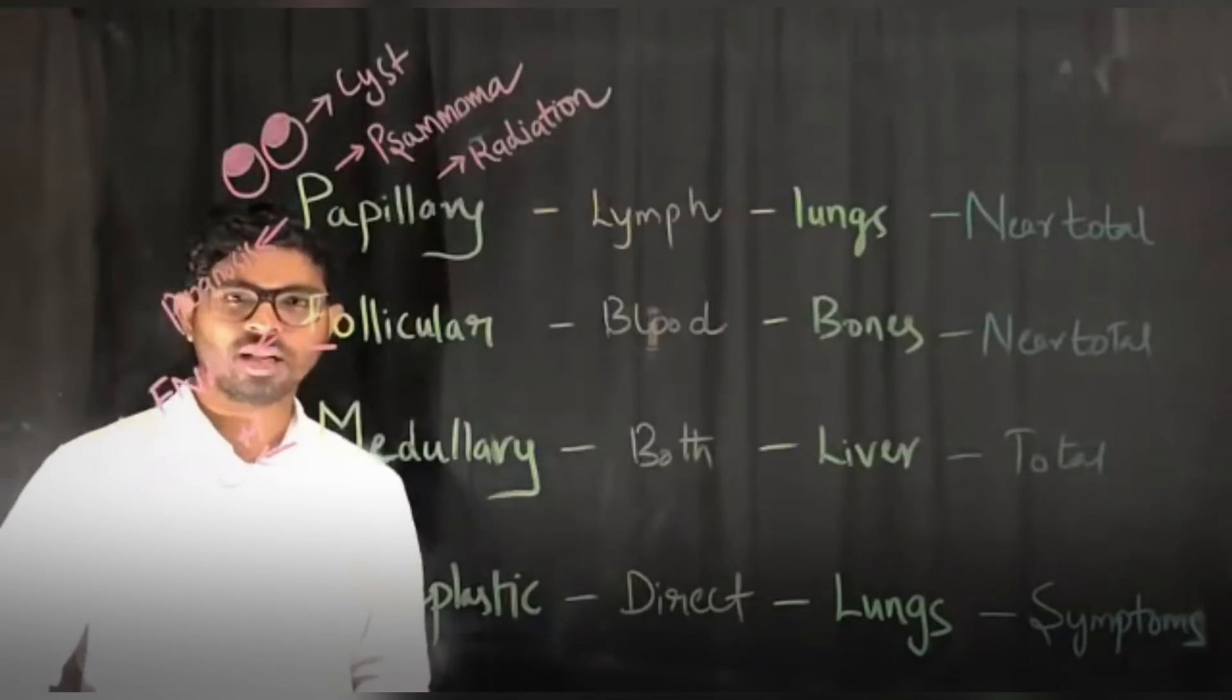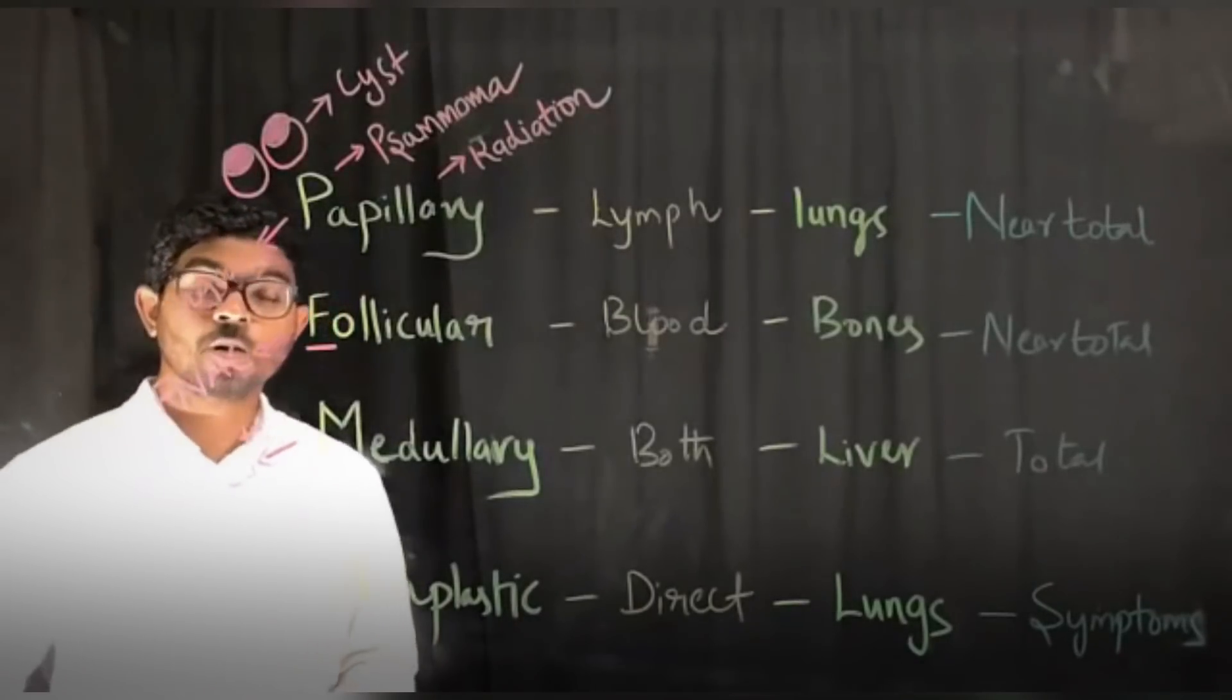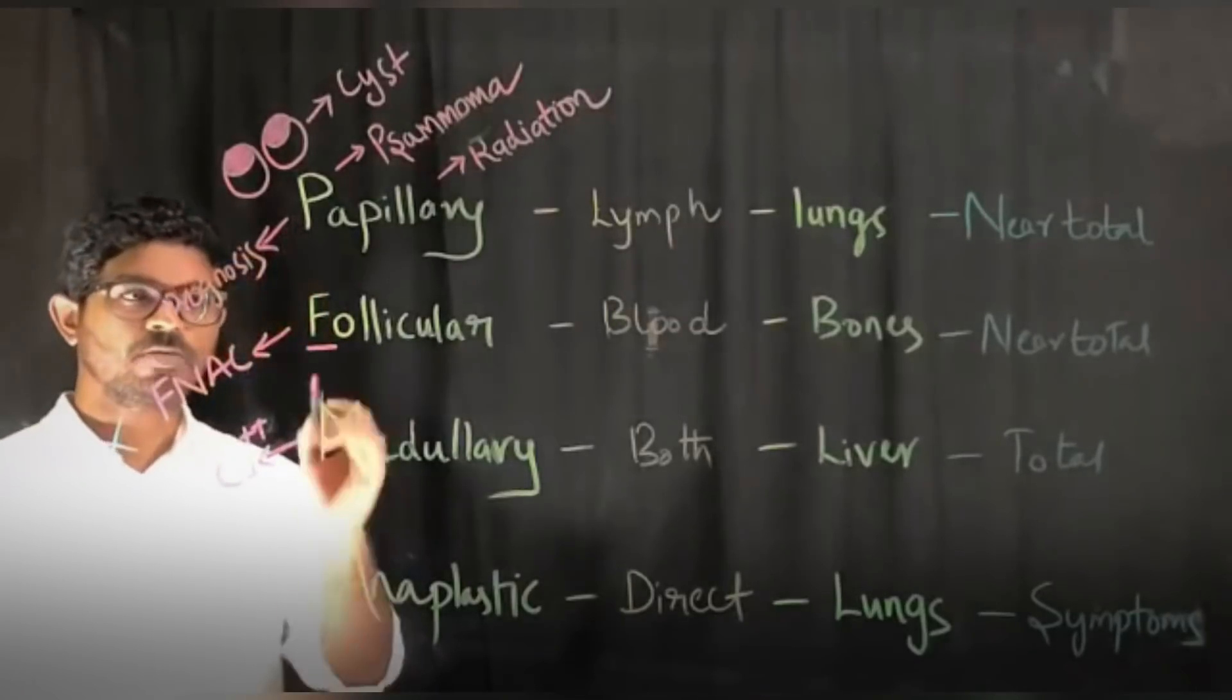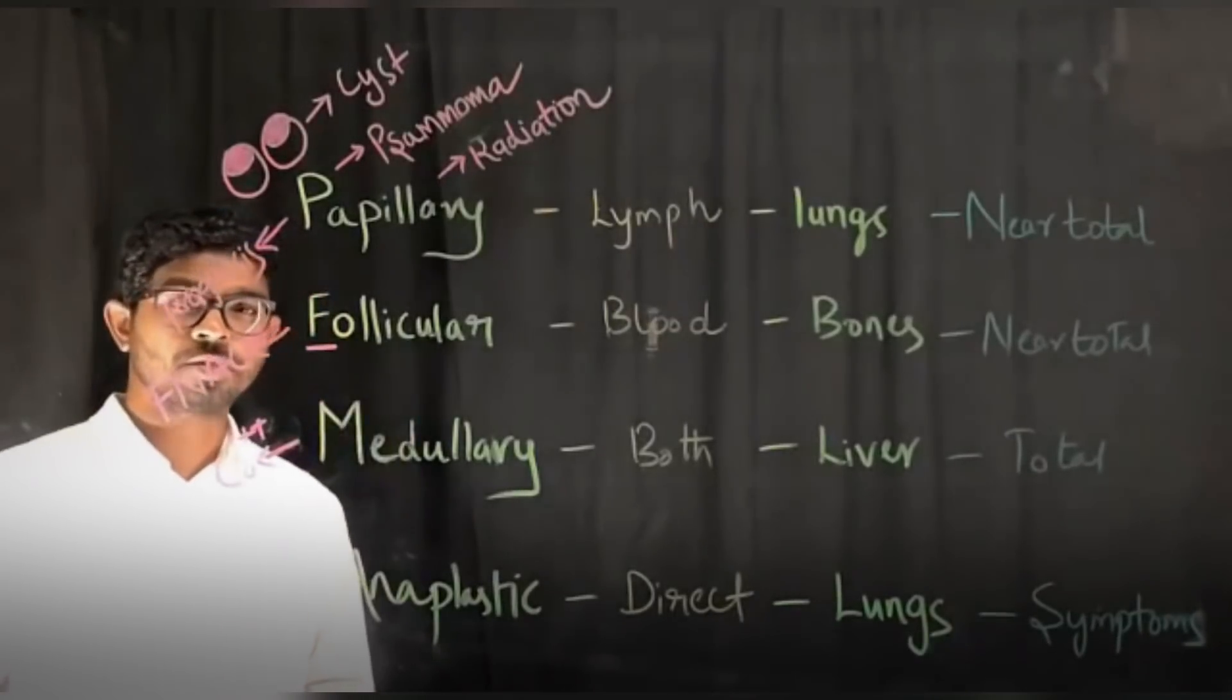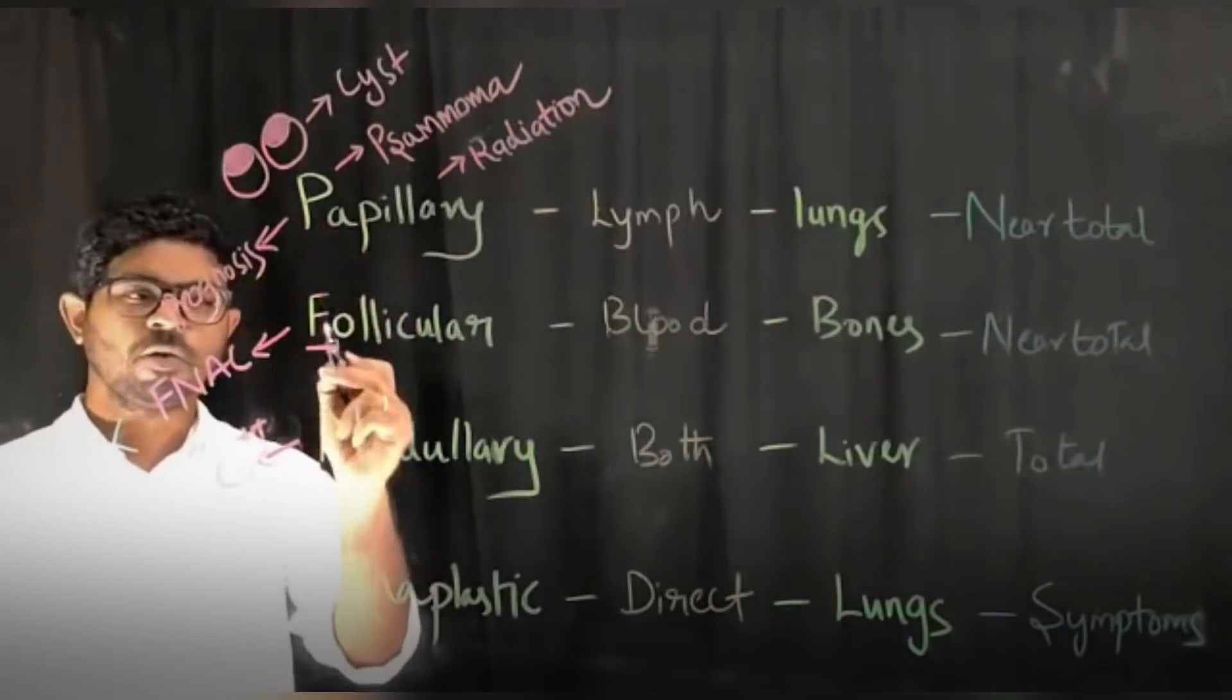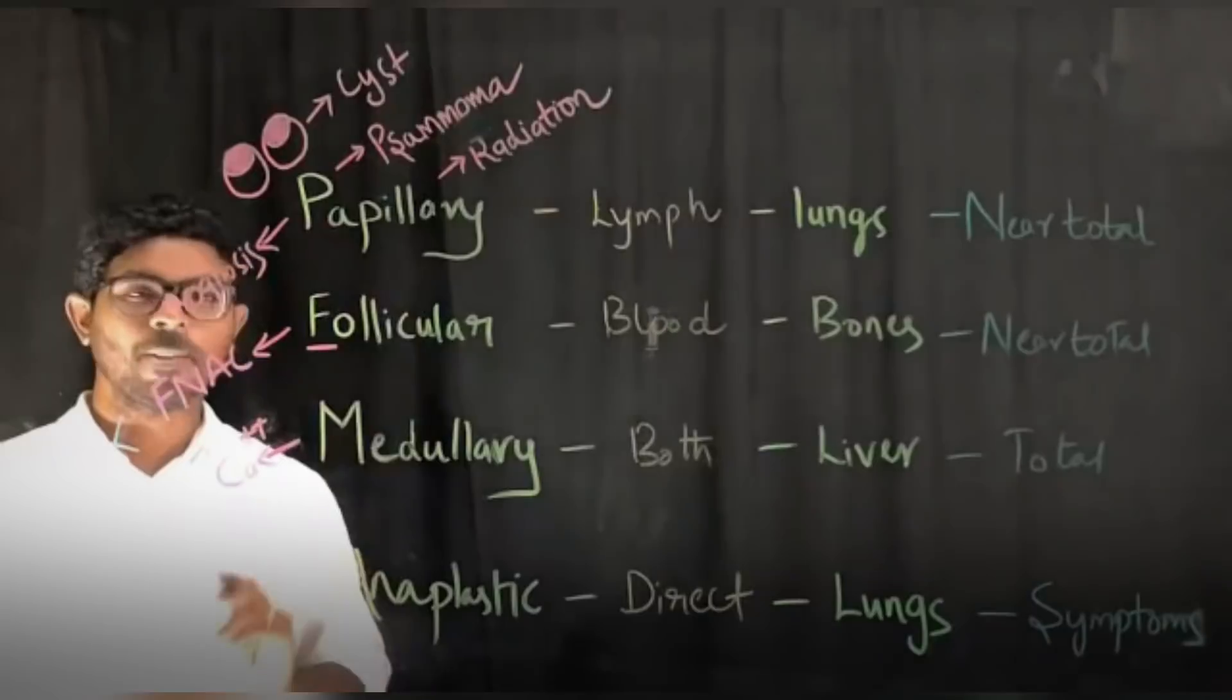The most common area where we get confused is the histological types. The most common histological type of adenoma is follicular, whereas the most common histological type of thyroid carcinoma is papillary. The order is papillary, follicular, medullary, and anaplastic.